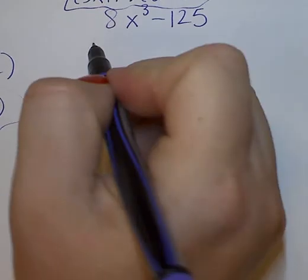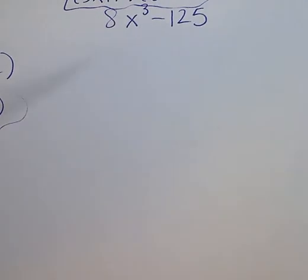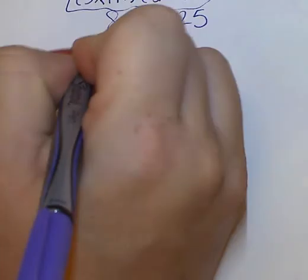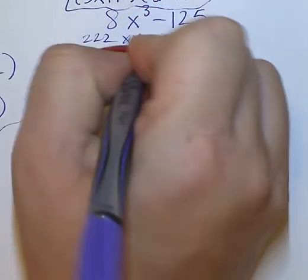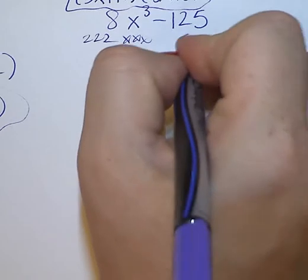Factor the expression. So we have a sum or difference of cubes. In this case, it is a difference. 2 times 2 times 2 is 8. X, X, X. And 125 is broken into 5, 5, and 5.